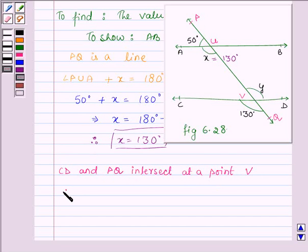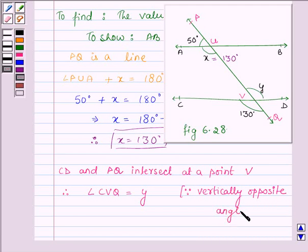angle CVQ is equal to y since they are vertically opposite angles. And angle CVQ is 130 degrees, so 130 degrees is equal to y. Thus we have y is equal to 130 degrees.